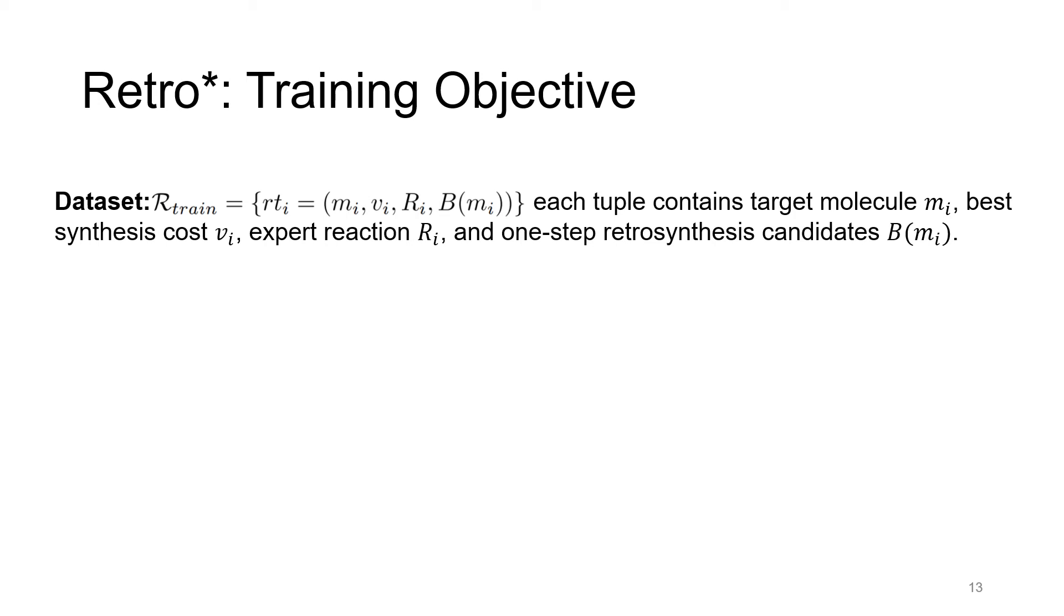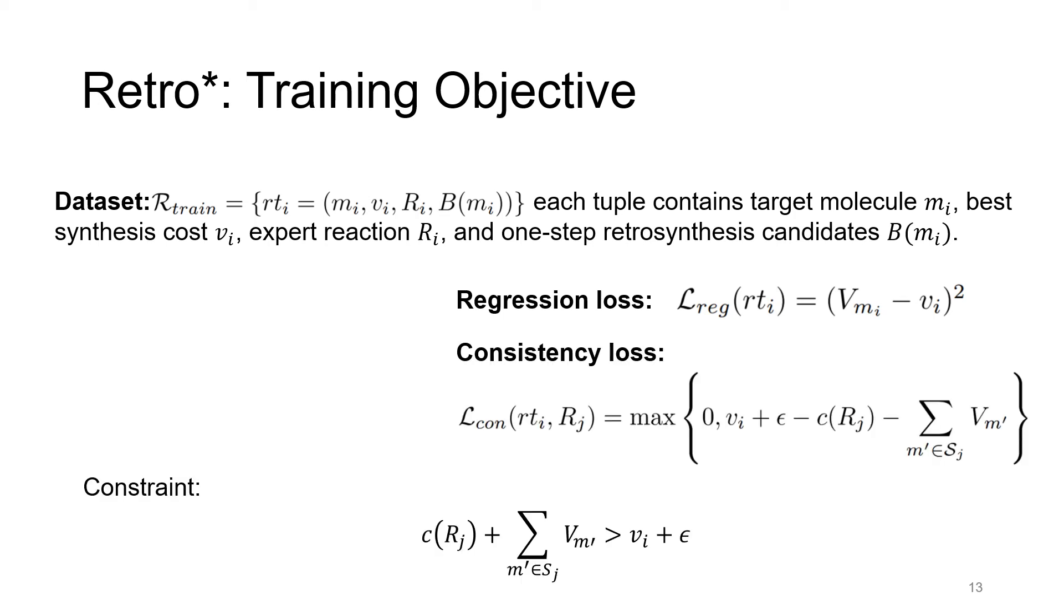There are two parts in the training objective. The first part is a regression loss, which is trying to fit the value of Vmi to the ground truth Vi. The second part is the consistency loss, which tries to maintain the partial order relationship between the best one-step solution Ri and other solutions in B(mi). Here, epsilon is a positive constant margin to ensure that Ri has higher priority for expansion than its alternatives, even if the value estimates have some tolerable noise. And the total objective is like this, where a hyperparameter lambda is used to balance the two losses. We set lambda to be 1 by default.